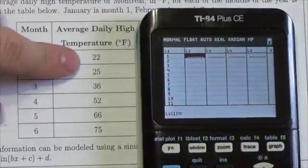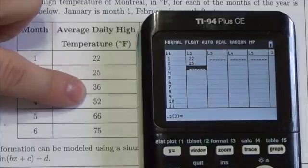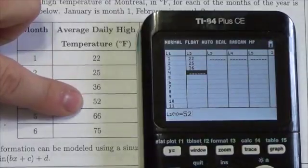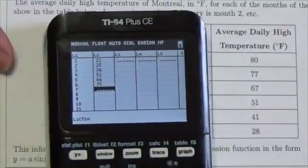Now we come across here, we're going to start to enter in the temperatures. So 22, 25, 36, 52, 66, 75. Now that's that information.